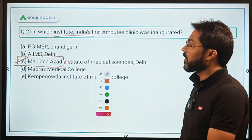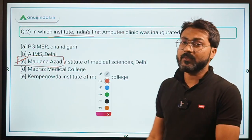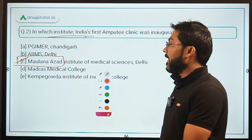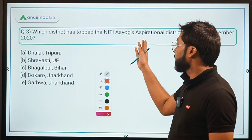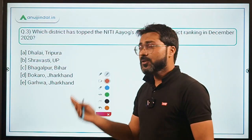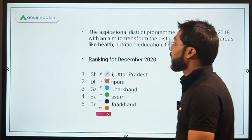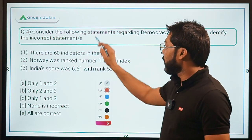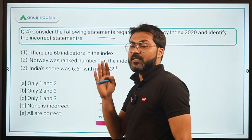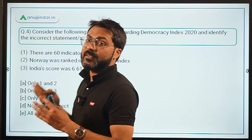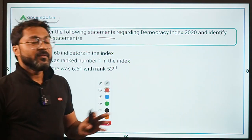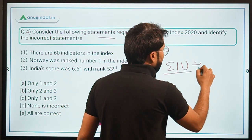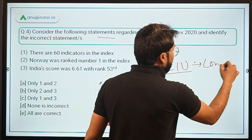Both question 2 and question 3 are very important — question 2 is about India's first amputee clinic, and question 3 is about the NITI Aayog Aspirational District Ranking. Now let's come to question number 4, which is about the Democracy Index 2020 released by the Economist Intelligence Unit, located in London.